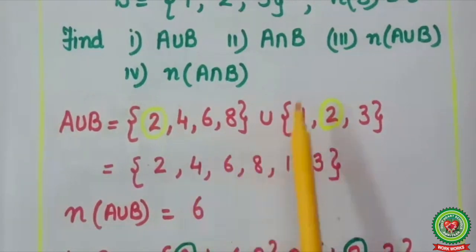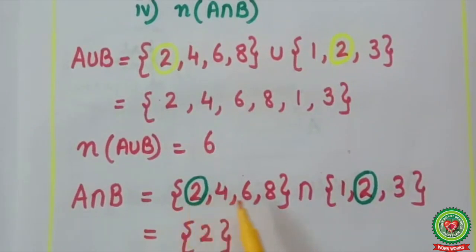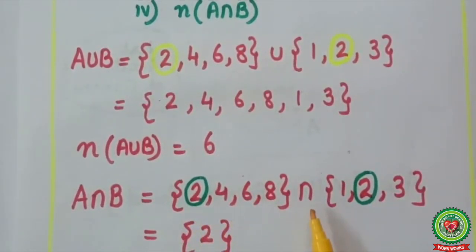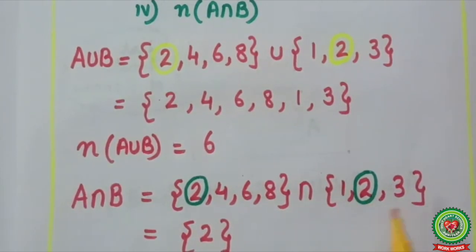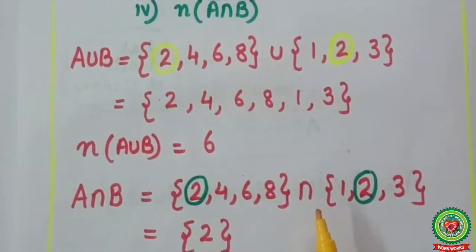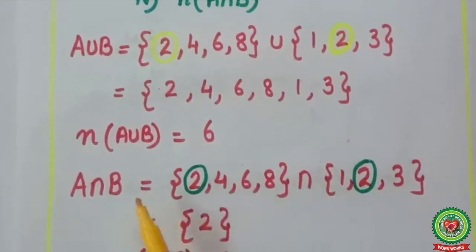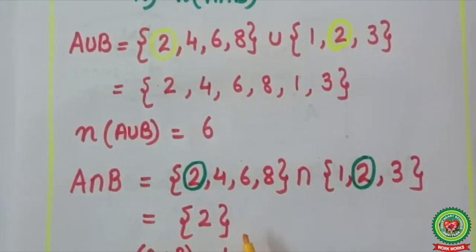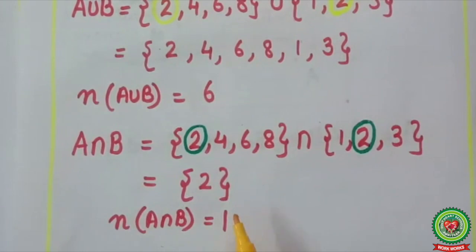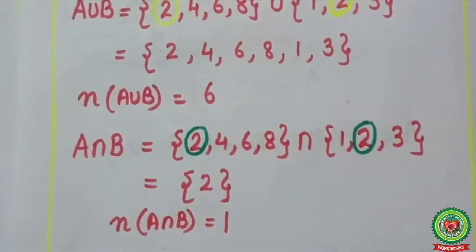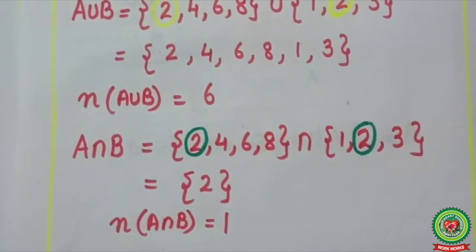Now to find A∩B, I write set A = {2, 4, 6, 8}, then the intersection symbol, then set B = {1, 2, 3}. Intersection means common elements. The only element common to both sets is 2. So A∩B = {2}, and its cardinal number is 1, as only one element is present.